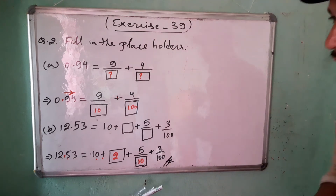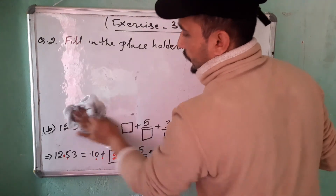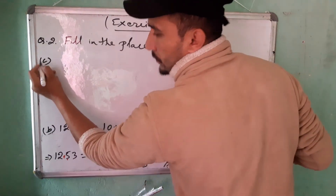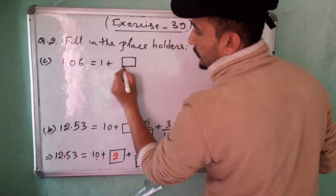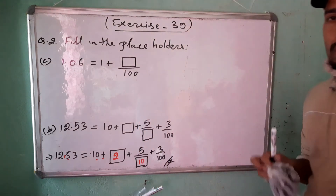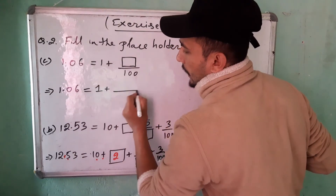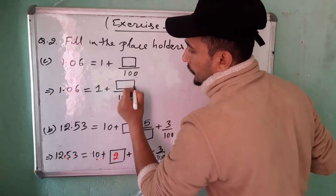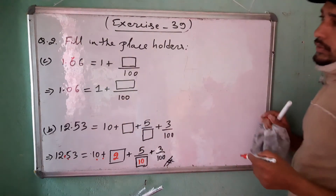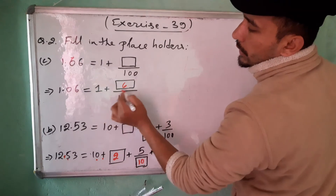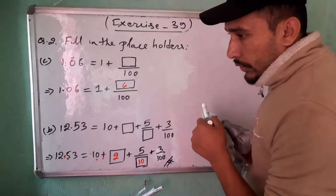Question number C is: 1.06 equals 1 plus (box) divided by 100. So 1.06 equals 1 plus 6 divided by 100. Just write 6 here.